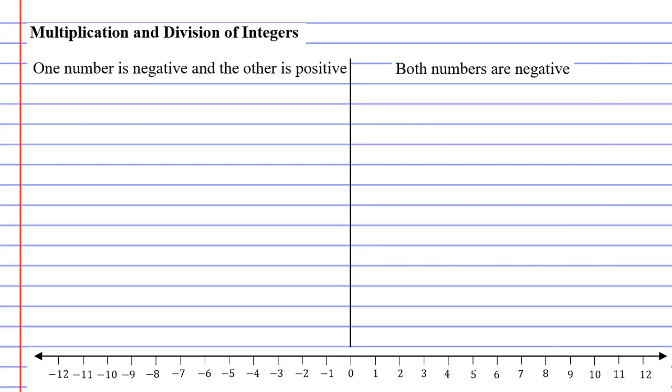So we're going to pick a positive number. We'll pick 2 and a negative number, negative 3, putting it in brackets. And we're going to multiply these two numbers together and see what happens.